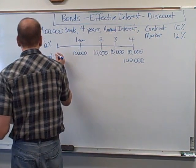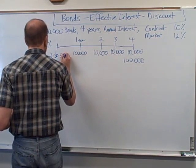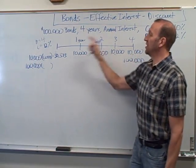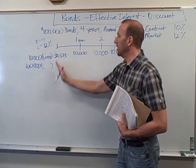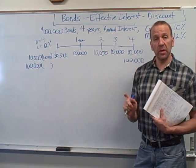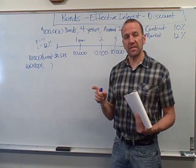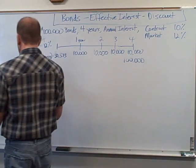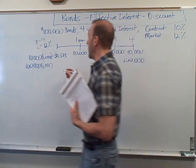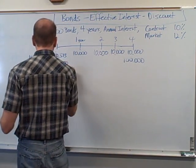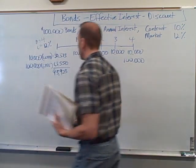Multiplying 3.0373 by $10,000 gives us $30,373 - that's what our annuity stream is worth today. The $100,000 principal we discount back to the present using the present value of a single dollar amount table. Go four periods out at 12%, and the factor there is 0.6355. So 0.6355 times $100,000 gives us $63,550. Adding these together: $30,373 + $63,550 = $93,923. That is the value of our bond.